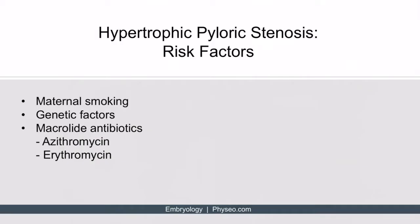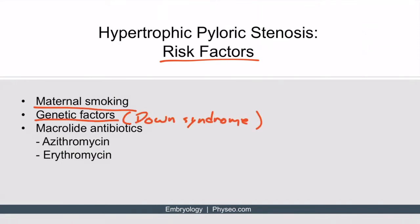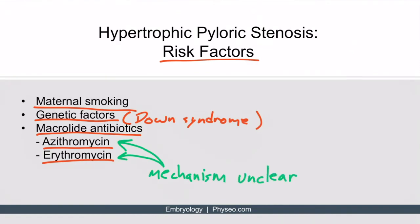Now that we've discussed the pathophysiology and presentation of hypertrophic pyloric stenosis, let's talk about the risk factors. These include maternal smoking, genetic factors such as Down syndrome, and even macrolide antibiotics including azithromycin and erythromycin — though it's unclear why these drugs cause this condition.